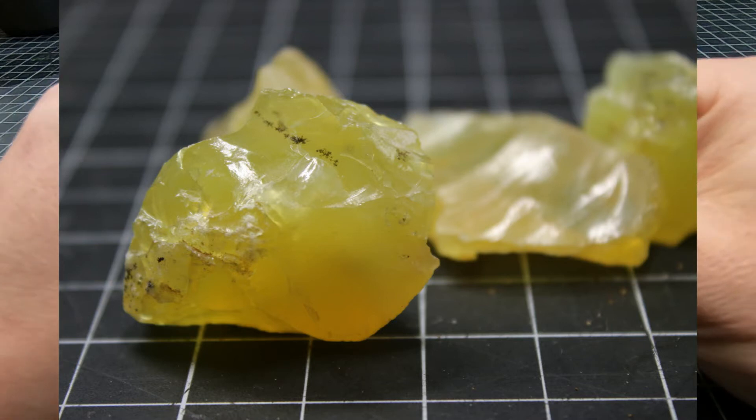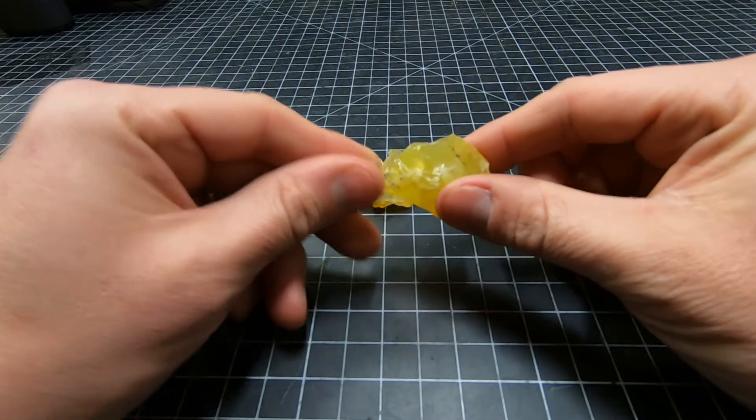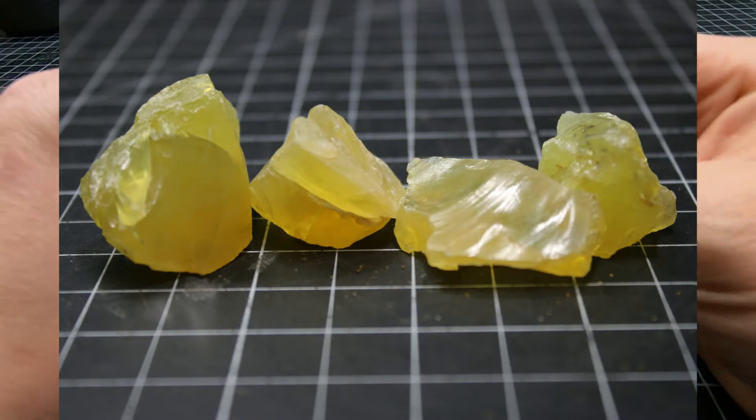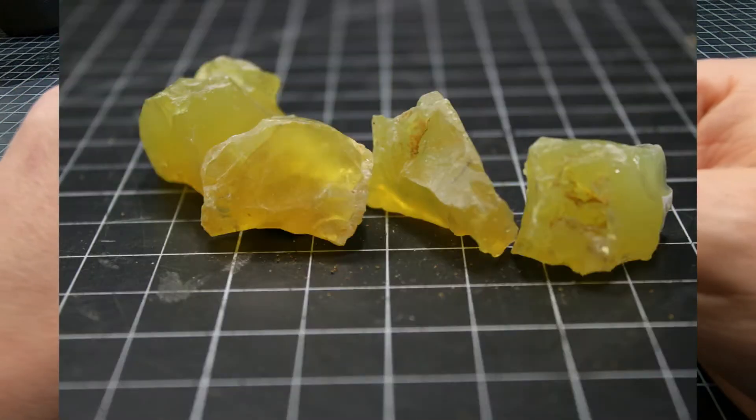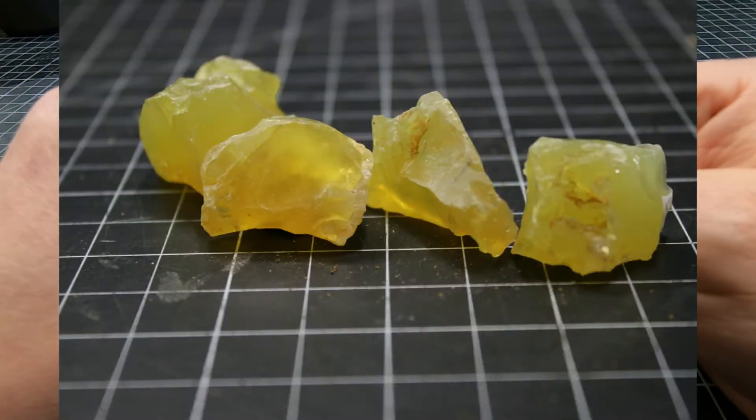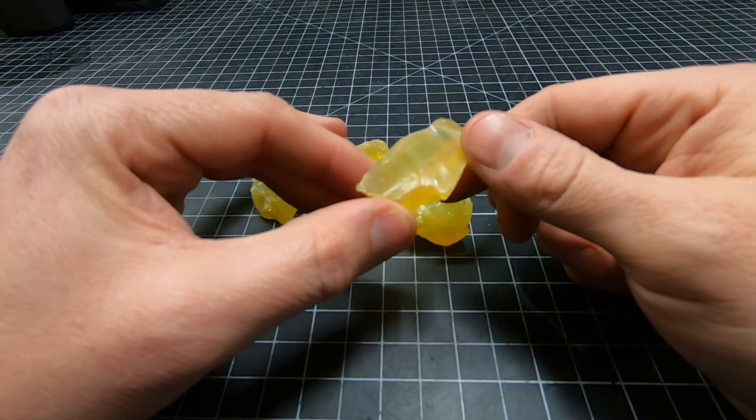It has a gravity of just a little bit over two, which that's in line with Opal. It has a hardness of six, which is also in line with Opal. And you can kind of see the fracturing there, the cleavage.